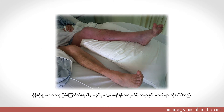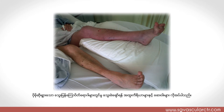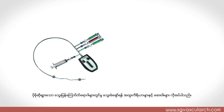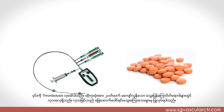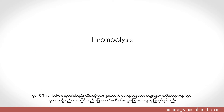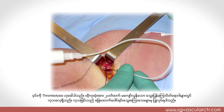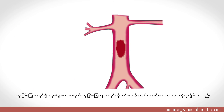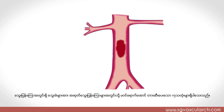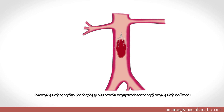If the DVT is extensive, it is sometimes necessary to use a combination of mechanical devices and special drugs to dissolve the clots. This process, known as thrombolysis, is usually done if the DVT is less than two weeks old and can be done via small groin vein punctures. Other adjunctive procedures include the insertion of metallic filters in the inferior vena cava — the largest vein in the abdomen — draining the legs to trap loose clots.